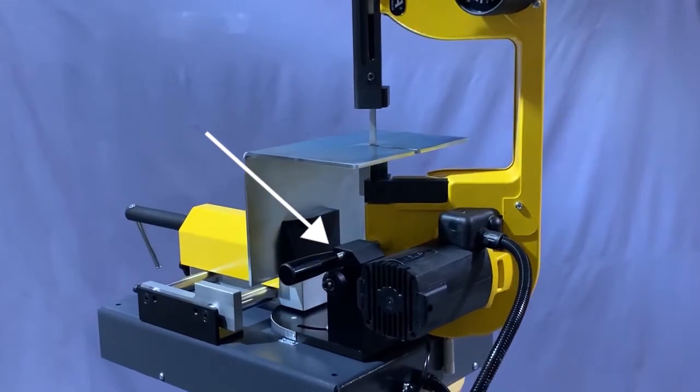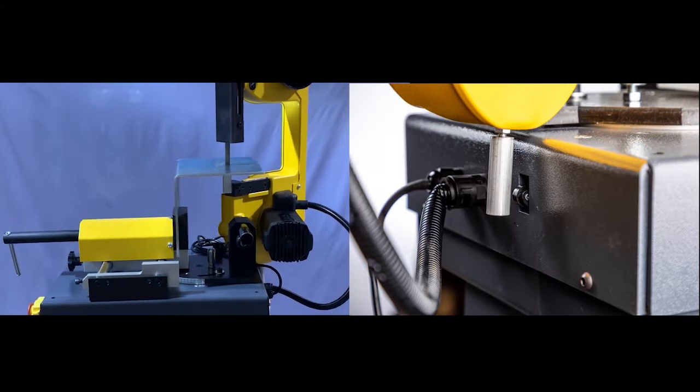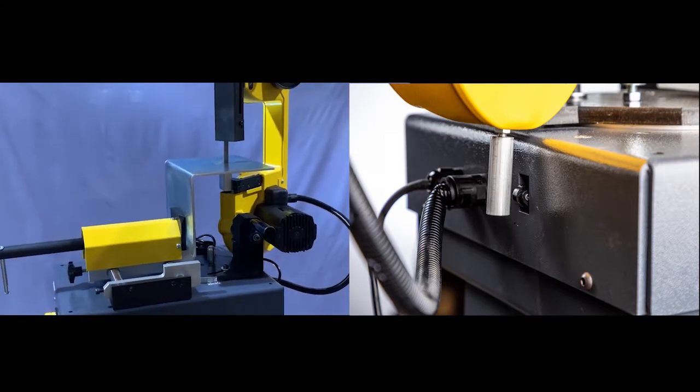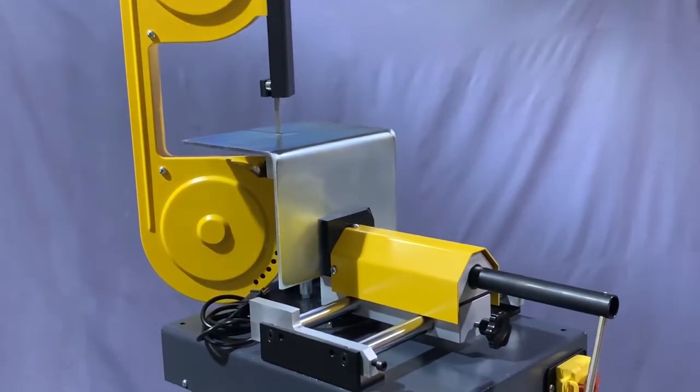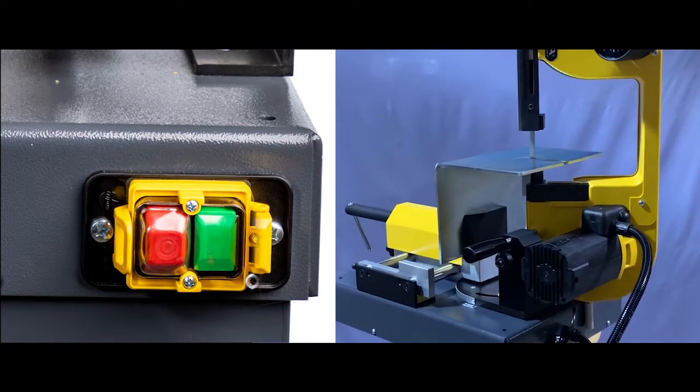When the saw head is vertical, a micro switch on the back of the base is activated. This disables the switch on the handle, which is now in an awkward position, and energizes a start-stop switch on the front of the base located for convenient and safe use in the vertical position.